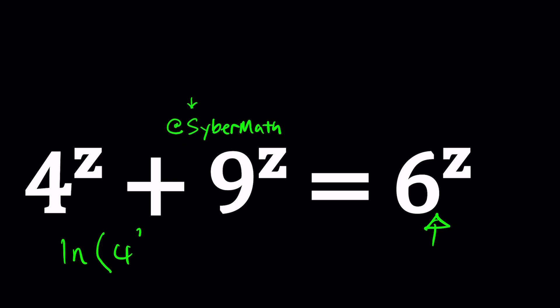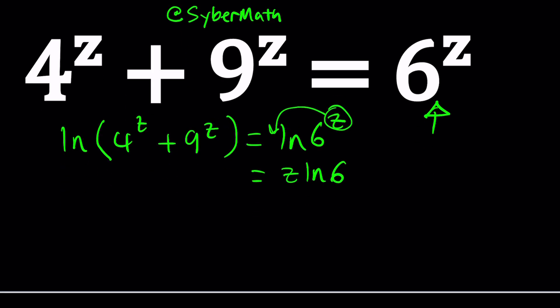ln of 4 to the power of z plus 9 to the power of z equals ln 6 to the power of z. Check the right-hand side, you can go ahead and bring the z over. That's the cool part about logging both sides. Any base, this will work, but ln is more common.